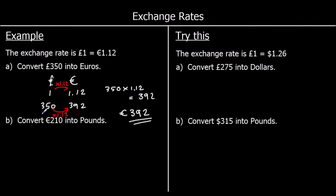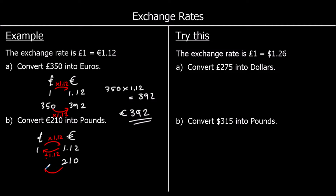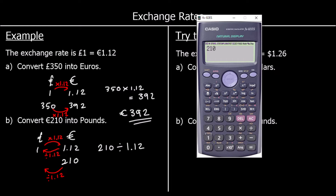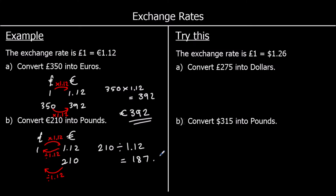That's what we're going to use in the second question: converting 210 euros to pounds. We know one pound is worth 1.12 euros, and we've got 210 euros. To go from one pound to 1.12 euros we times by 1.12, so to go back the other way I'm going to divide by 1.12. So 210 divided by 1.12 is 187.5. But this is money, so it's going to be 187 pounds and 50p — half a pound is 50p.